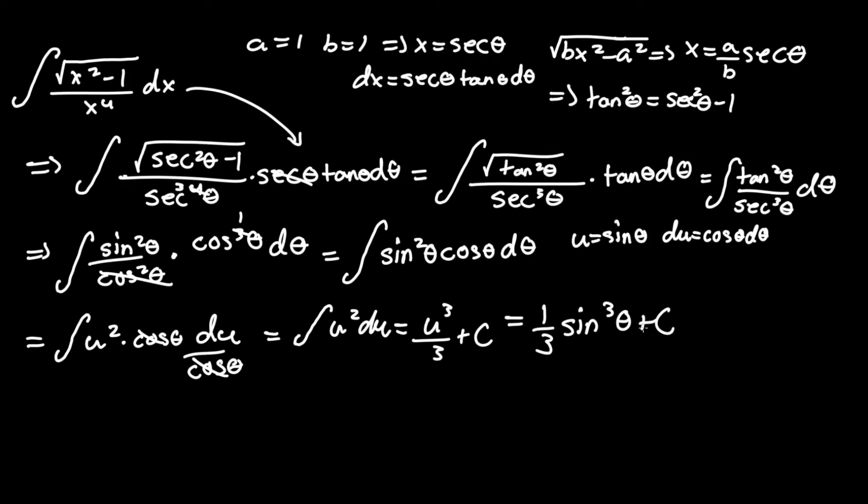However, we're not at the answer yet. We initially had the integral in terms of x, so we're going to have to go from theta to x. Essentially, this is where the triangle comes in. We look back up here where we were solving some of the variables, and we can see that x equals secant theta.